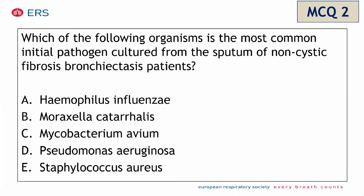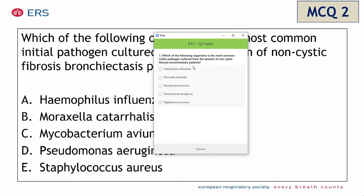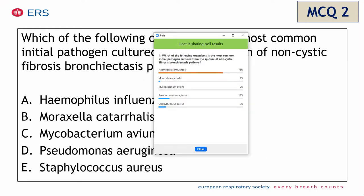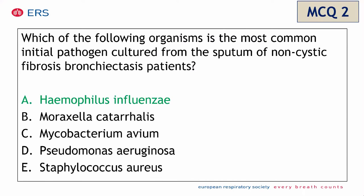Second MCQ: which organism is the most common initial pathogen cultured from sputum in a non-cystic fibrosis bronchiectasis patient? Options: Haemophilus influenzae, Moraxella catarrhalis, Mycobacterium avium, Pseudomonas aeruginosa, or Staphylococcus aureus. The right answer is Haemophilus influenzae, and more than 70 percent of you gave the right answer.